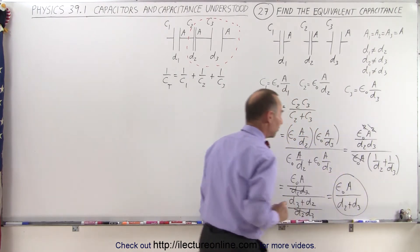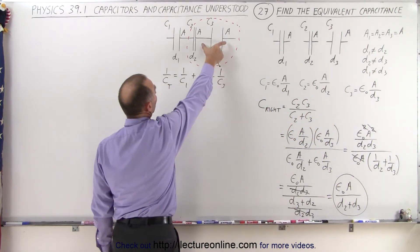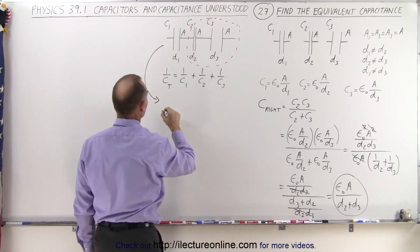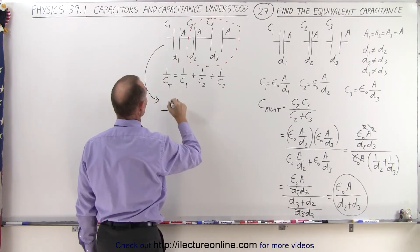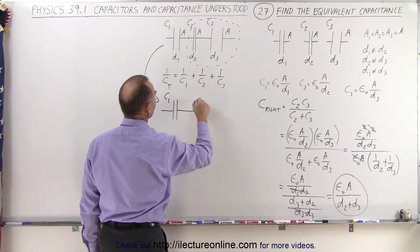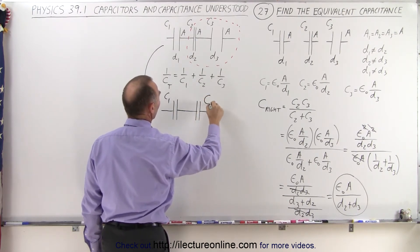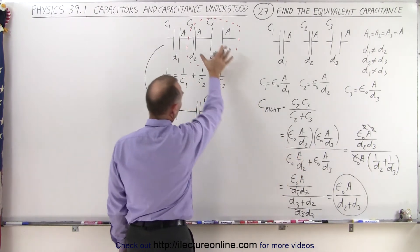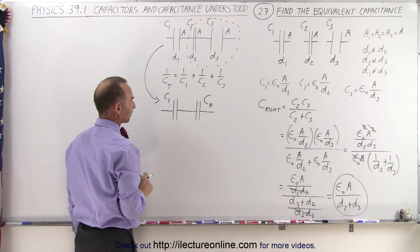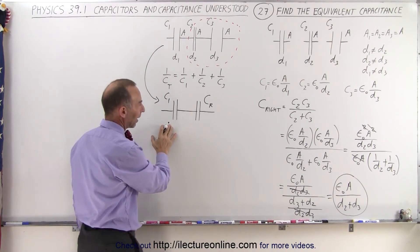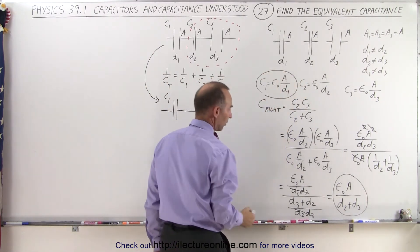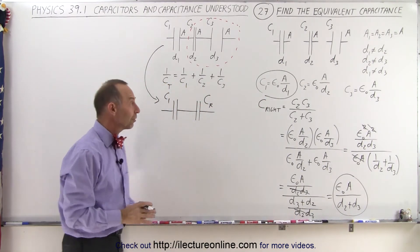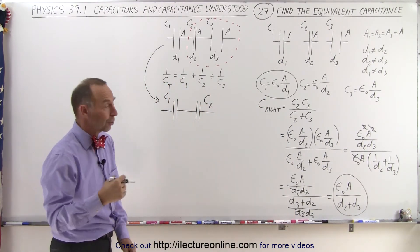That is the equivalent capacitance of the right two capacitors. So then what I can do is take my left capacitor, which is C1, and these two combined I'll call C sub R — the capacitance of the right two capacitors. On the left I have C1, which is epsilon sub-naught A over D1. On the right I have epsilon sub-naught A over D2 plus D3. Now I'm ready to combine those again using the product over the sum.